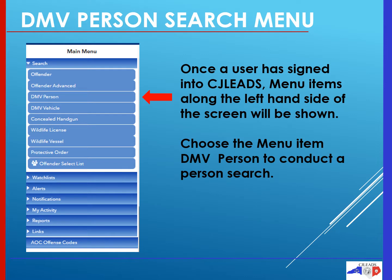Once a user has signed into the CJ Leads program, menu items along the left-hand side of the screen will be shown. Choose the menu item DMV Person to conduct a DMV person search.